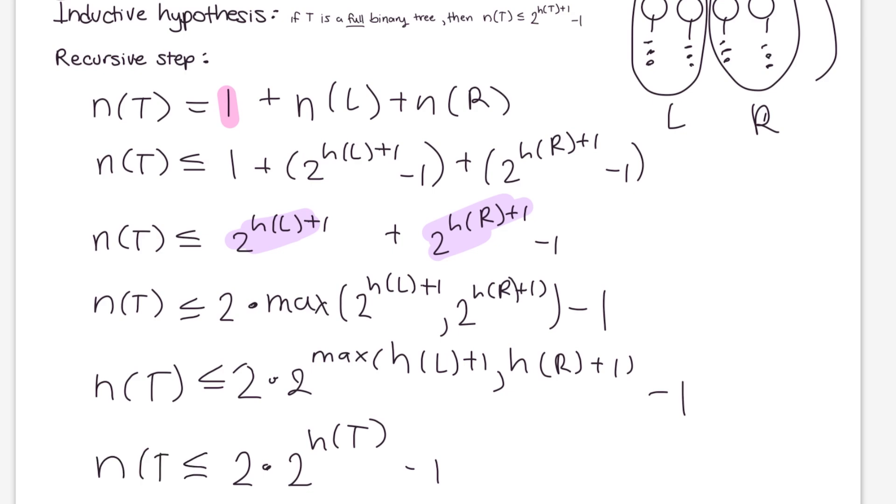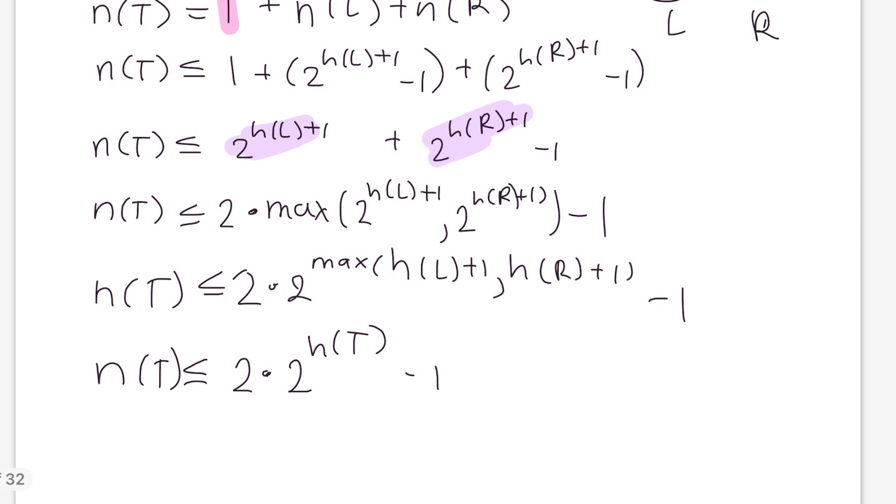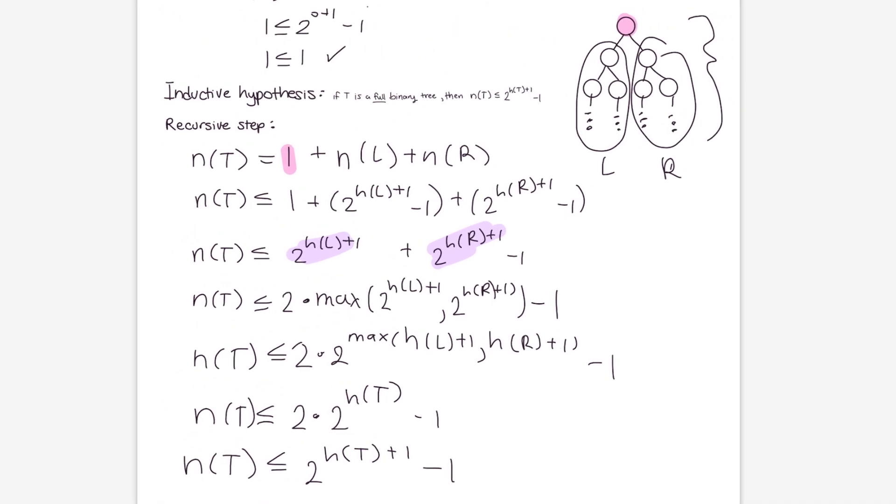And, again, this is some exponent simplification because we just want to rewrite it in the form we had above. And now, we have proven that the property applies for any size of tree. So, this would be our concluding step right here. We've proven that it works for the left, the right, and the root.